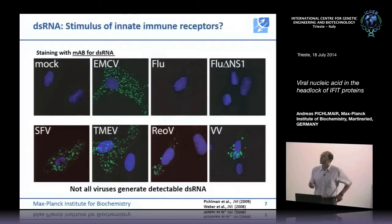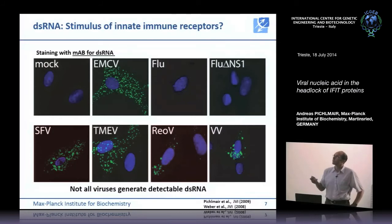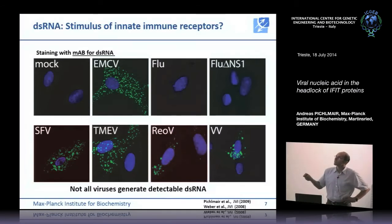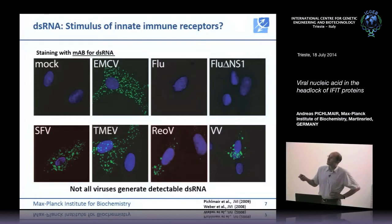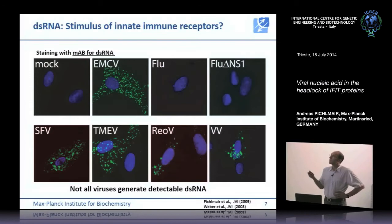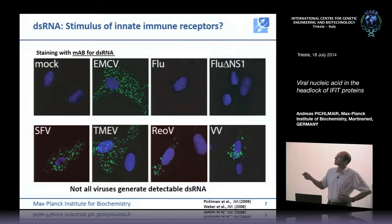If you look at virally infected cells and stain for double-stranded RNA using antibodies, you find that viruses are actually very diverse in their ability to generate these double-stranded RNAs. Some picornaviruses generate vast amounts of double-stranded RNA in the cytoplasm. Semliki Forest virus, a flavivirus, does the same. Reovirus and vaccinia virus, which is actually a DNA virus, also generate double-stranded RNAs.